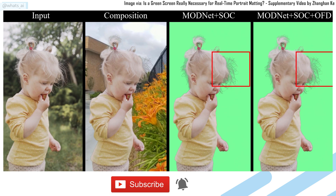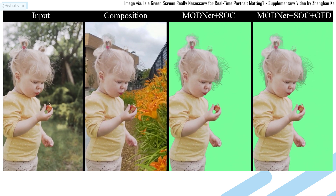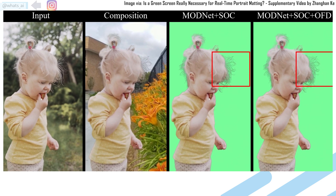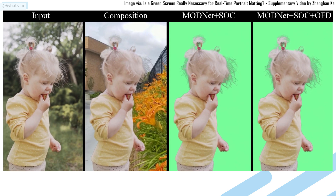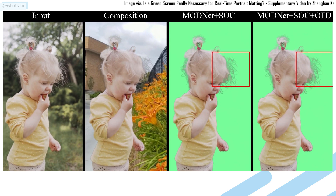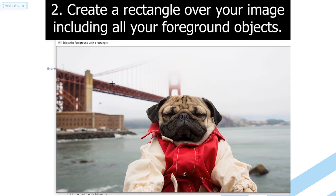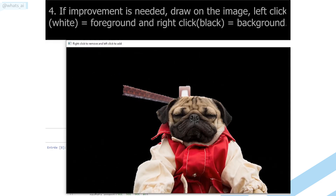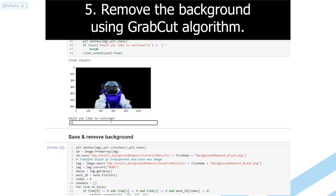Human matting is an extremely interesting task where the goal is to find any human in a picture and remove the background from it. It is really hard to achieve due to the complexity of the task, having to find the person or people with the perfect contour. Many techniques use basic computer vision algorithms such as the GrabCut algorithm, which is extremely fast but not very precise. GrabCut basically estimates the color distribution of the foreground and background using a Gaussian mixture model. This is why we often use a green screen, helping the algorithm to remove only the green pixels, but results are not so great without one.